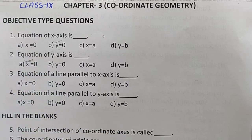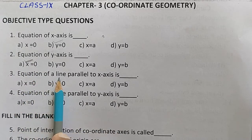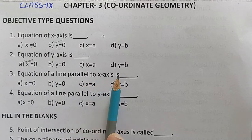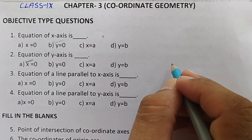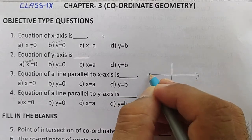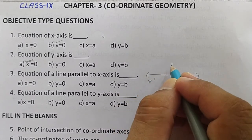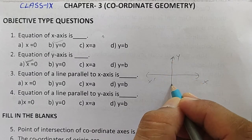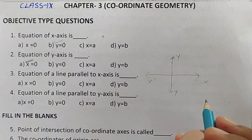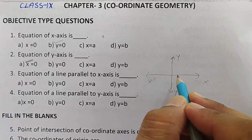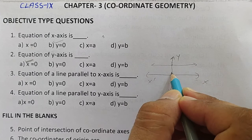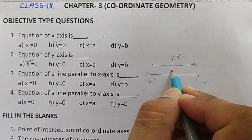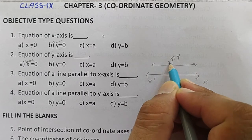Next question: equation of a line parallel to x-axis. Let's draw here — this is x-axis (X–X') and this is y-axis. Suppose a line parallel to x-axis is drawn here, and this point is at y = 2.